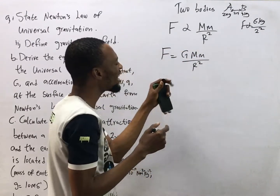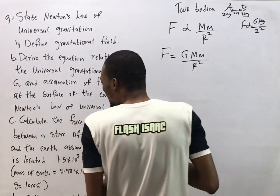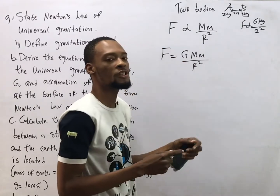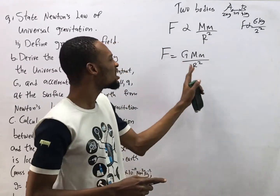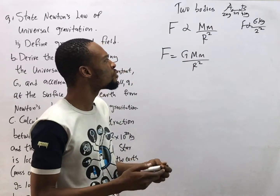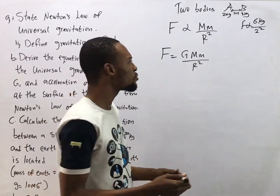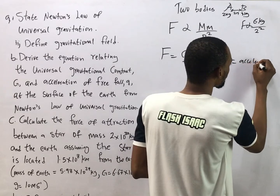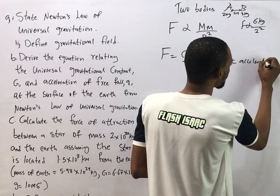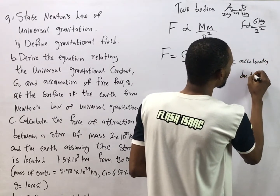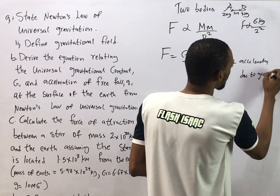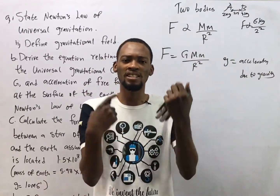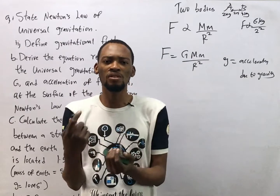Here, G is the universal gravitational constant — big G — and this big G is different from small g. Small g is the acceleration due to gravity, which is the force that brings all objects downward as an object goes up.